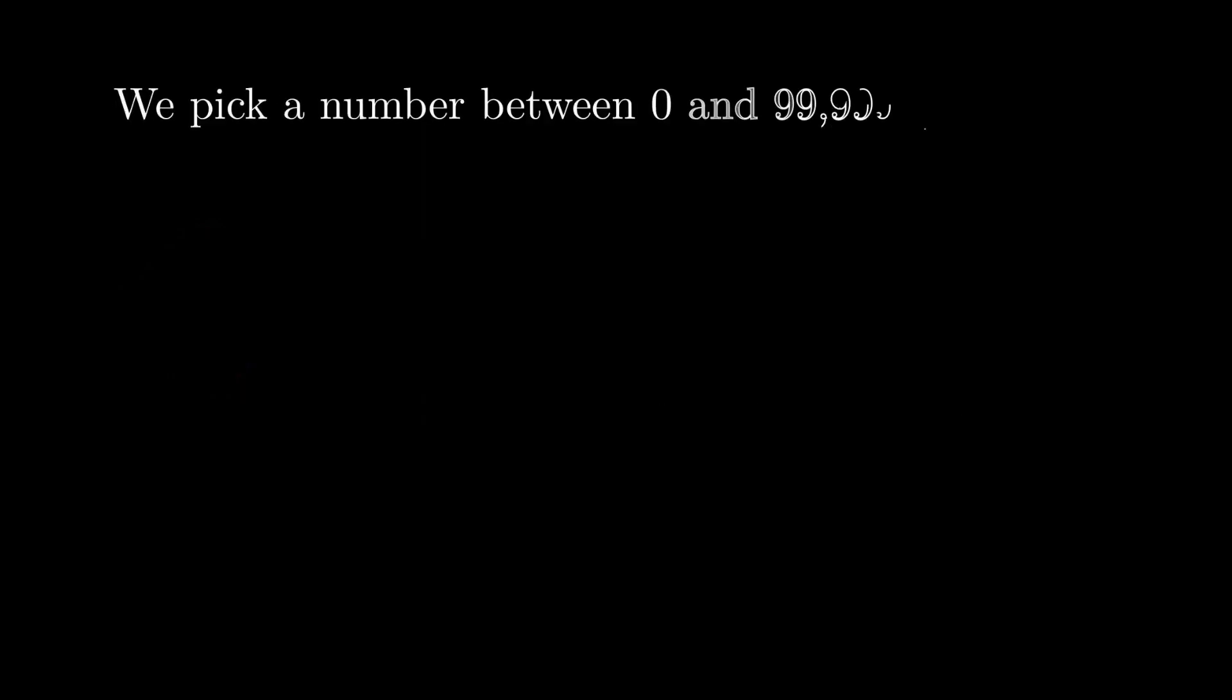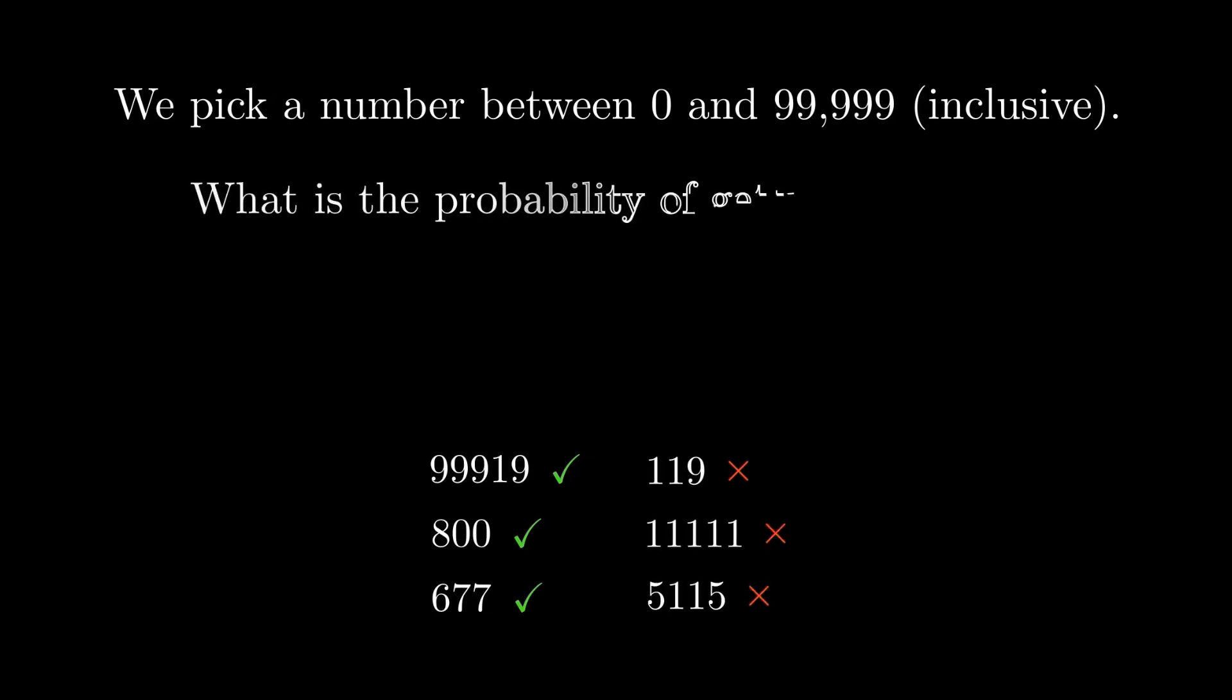We pick a number between 0 and 99,999 inclusive. We want the number to have no adjacent ones. For example, these numbers are valid. On the other hand, these numbers are invalid as they contain adjacent ones. So what is the probability of getting a number where no two ones are adjacent? Pause the video here if you want to give it a try.